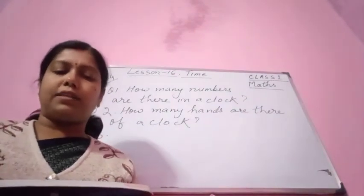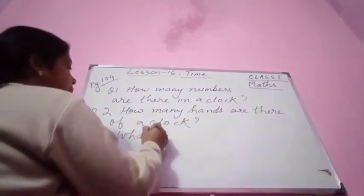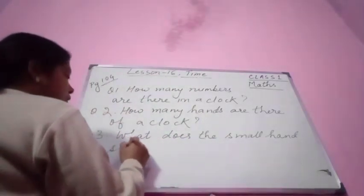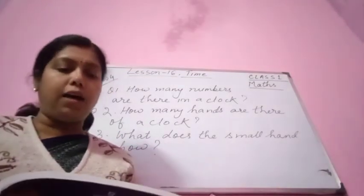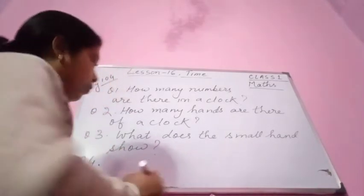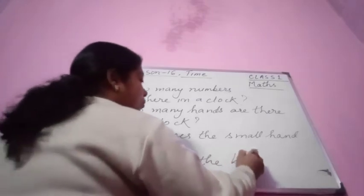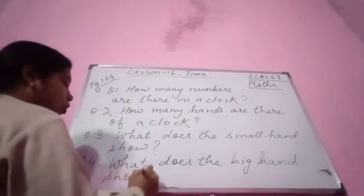The small hand shows the hours. What does the small hand show? The small hand shows the hours. The big hand shows the minutes. What does the big hand show? The big hand shows the minutes.